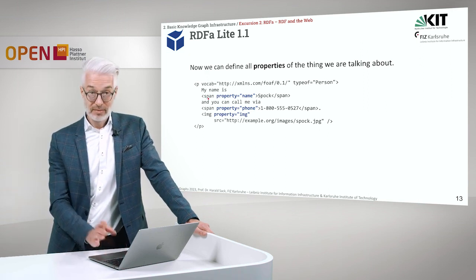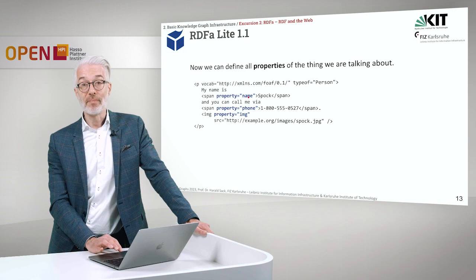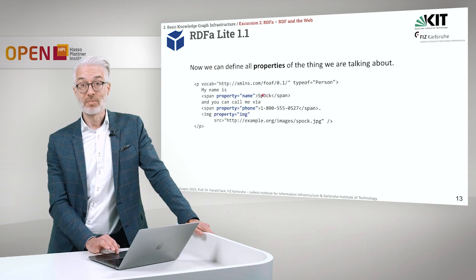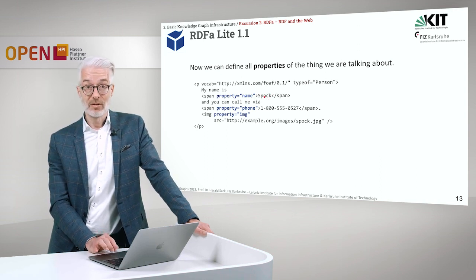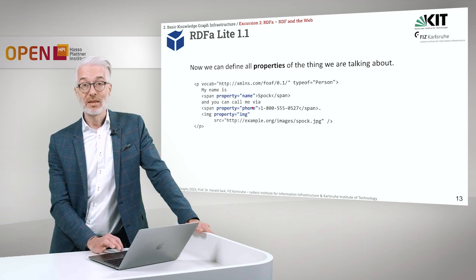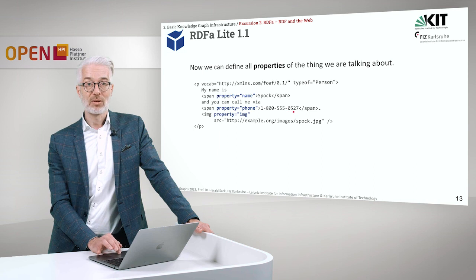Now we can define all properties of the thing we are talking about. The first property, in a span tag reusing the property attribute, is 'name'. The name here is Spock — the parsable character data from the HTML serves as the property value. Then we introduce another property, which is 'phone'. The string that follows is the content — the value of the phone number property. So from the FOAF vocabulary, we take the property 'name' and assign the string 'Spock' as a literal.